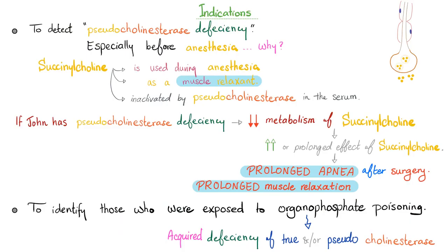So now we're talking about the test called plasma level of cholinesterase. Indications: to detect pseudocholinesterase deficiency, especially before giving anesthesia. Why? Succinylcholine is used during anesthesia as a muscle relaxant during phase 2, which is the desensitization of the N-sub-M receptor. This succinylcholine gets inactivated by the pseudocholinesterase in the serum. However, if little Johnny has pseudocholinesterase deficiency, he will not be able to metabolize succinylcholine. Therefore, Johnny will suffer from an increase or prolonged effects of succinylcholine. Why is this a bad thing? Because succinylcholine is a muscle relaxant. Too much muscle relaxation, you get prolonged apnea after surgery and prolonged muscle relaxation after surgery. Another use of this beautiful test is to identify those who were exposed for a long period of time to organophosphate poisoning. Organophosphate poisoning can lead to acquired deficiency of the true or the pseudocholinesterase.